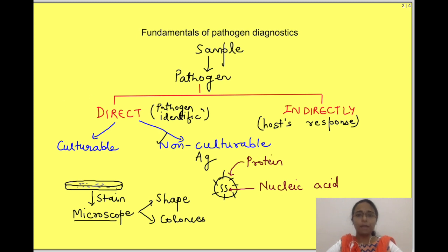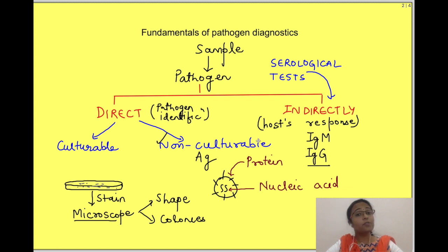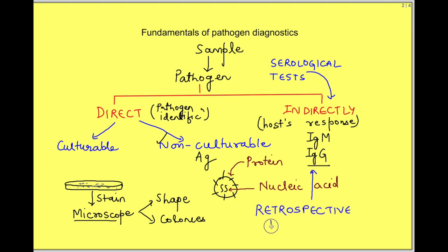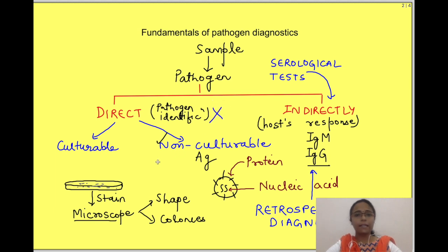For indirect tests, we detect the host immune response to the pathogen. We look for the presence of IgM or IgG antibodies, which develop against the host surface antigens or against the toxins produced by them. These are known as serological tests. It will take time for antibodies to develop, and the antibodies will also be present even when the infection has resolved. So generally, antibody detection is used for retrospective diagnosis — to know whether the person was once infected with the pathogen or not.